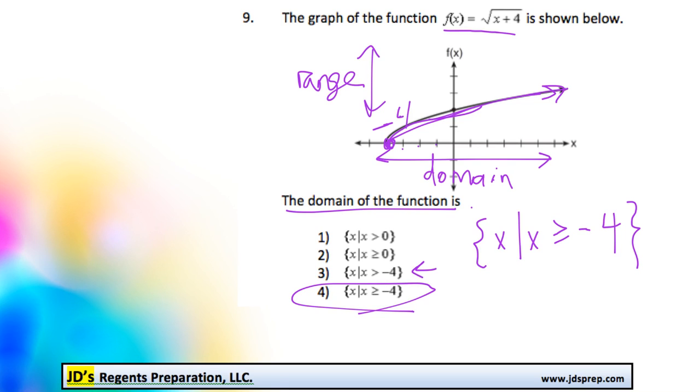By the way, option number 3, you'll notice the difference is that it's just greater than. That would be true if it was an open circle at the negative 4. But because it's a closed circle, it includes negative 4, so we know it's this one.